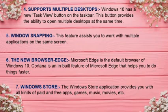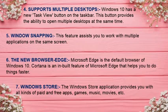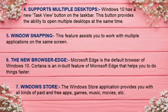The sixth feature is the new browser, Microsoft Edge, which is the default browser of Windows 10. A browser is a software application for accessing information on the World Wide Web, and Cortana is a built-in feature of Microsoft Edge that helps you do things faster. The seventh feature is the Windows Store, which provides you with all kinds of paid and free apps, games, music, movies, etc. — similar to the Play Store on phones, through which we can easily download apps and other content.